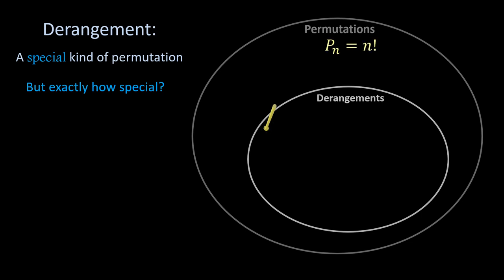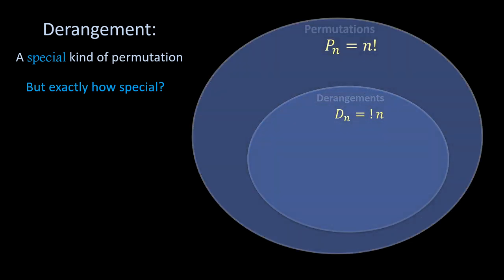The number of permutations for given n has already been counted. Let's call the number of derangements D_n, which is often written as the sub-factorial of n.